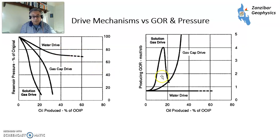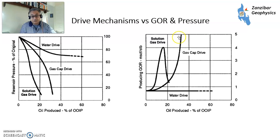The gas-oil ratio for solution gas drive comes up very high as the gas bubbles out, then drops off again as you run out of energy. The gas cap drive just keeps going because you're basically producing the gas, but that loses energy from the whole system. With water drive, it's kind of constant because your pressure is kept high.